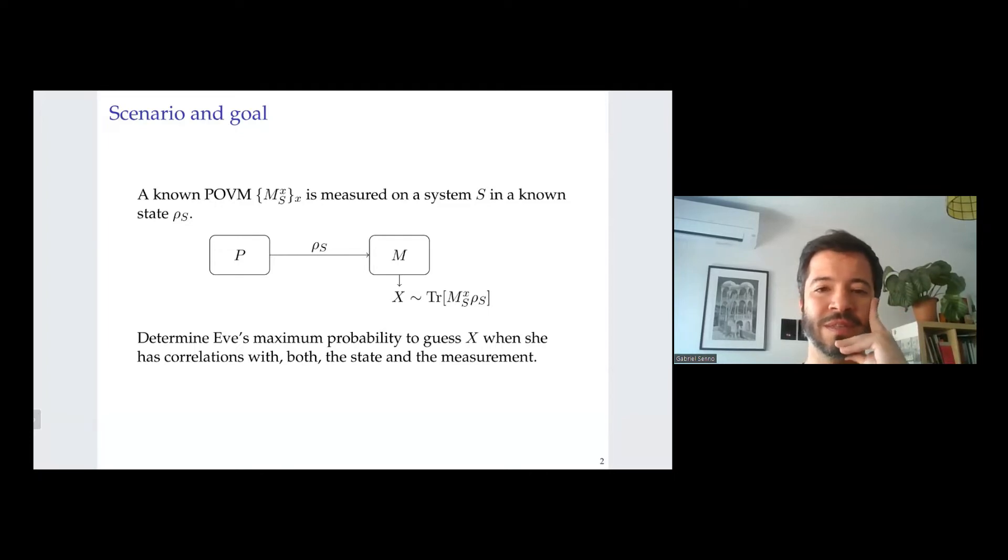So let me first describe the scenario, which is quite simple, yet is the most general for the problem that we are interested in. So we have a system S which is prepared on some state rho_s and some known POVM M_S is measured. So the state is known and the POVM is known, so this is like complete device dependent, so to speak.